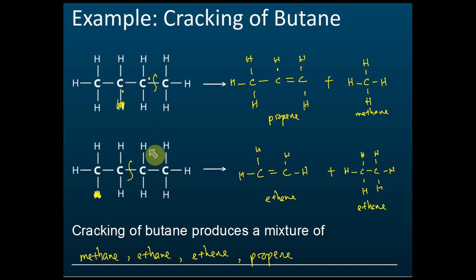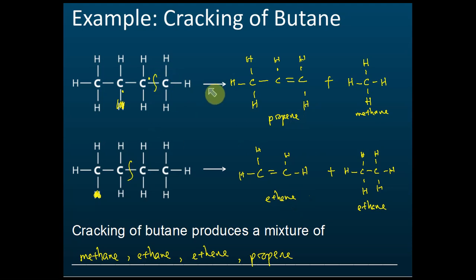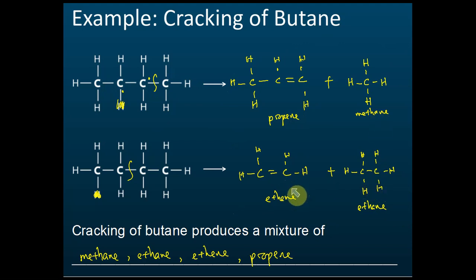Usually the exam will only give examples of butane cracking, sometimes propane, but very rarely others like pentane or hexane. The cracking of butane produces a mixture of methane, ethane, ethene, and propene — because we don't know which bond will be broken, sometimes it breaks here, sometimes there.